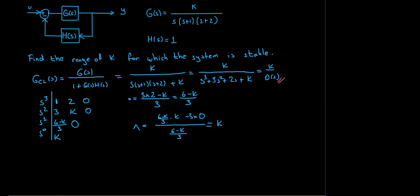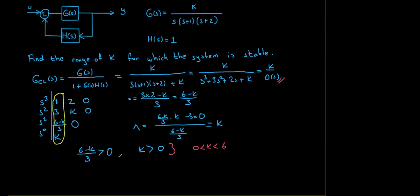For stability all first-column elements must be positive: 1 > 0 ✓, 3 > 0 ✓, (6-K)/3 > 0 requires K < 6, and K > 0. Combining both conditions, the system is stable when 0 < K < 6.